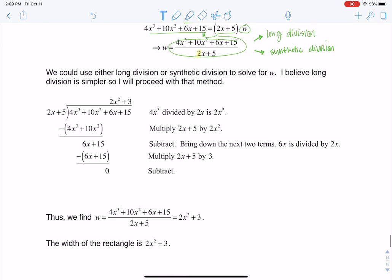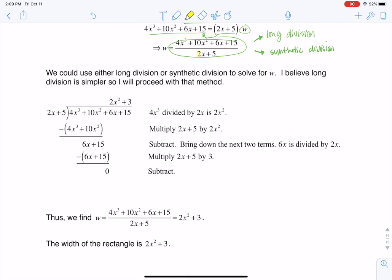Let me go ahead and scooch this up and let's try taking 4x cubed plus 10x squared plus 6x plus 15 and dividing that by 2x plus 5. So the game is always lead term to lead term. What do I need to multiply 2x by to get up to 4x cubed? Well, that is 2x squared.